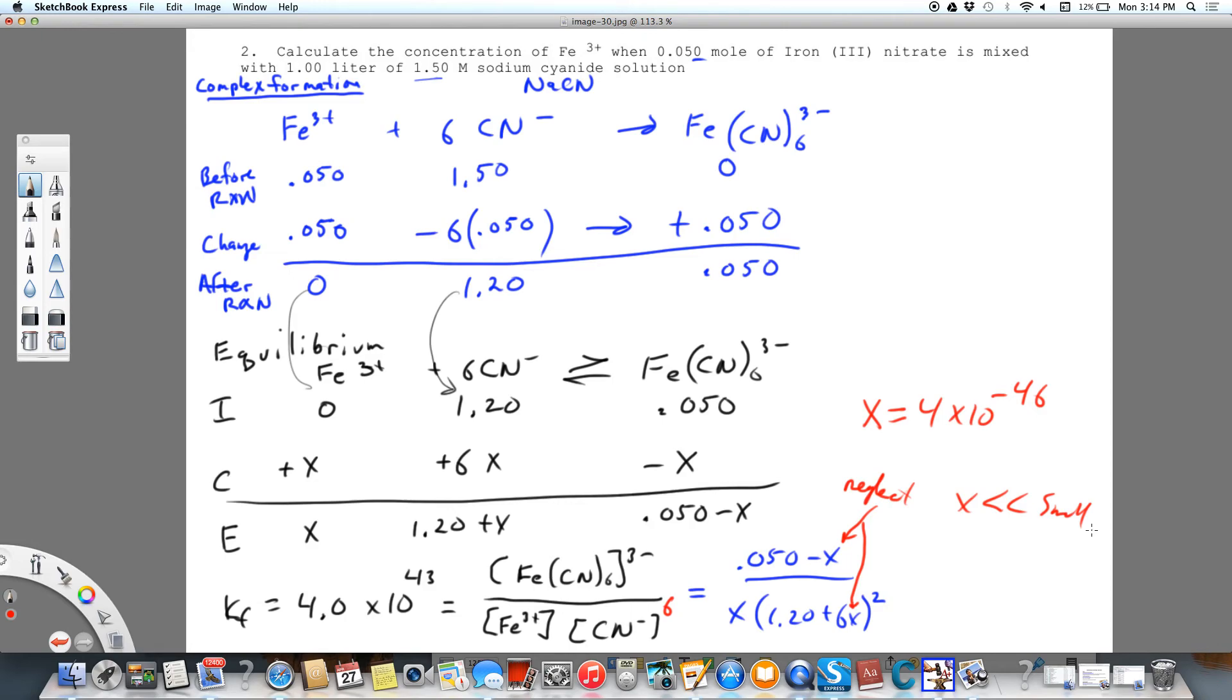So it says, what's the concentration of iron? So let's answer the question instead of just leaving it as X. This Fe3 plus concentration is going to equal 4 times 10 to the minus 46 molar. We could take that and divide it by our original concentration times 100. And we're going to see that that's way, way less than 5%. So we can neglect X, which is again why I said we set up our math the way we did.